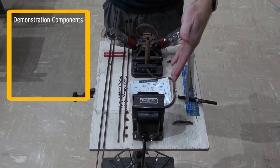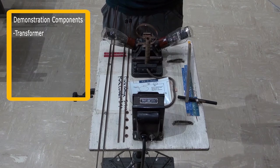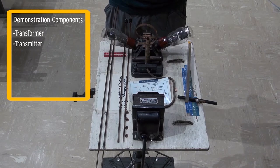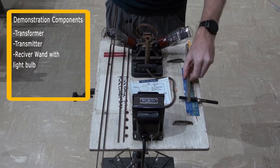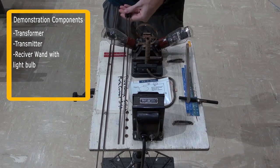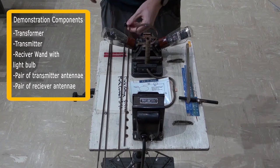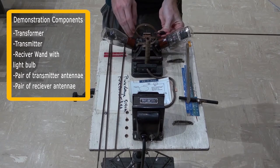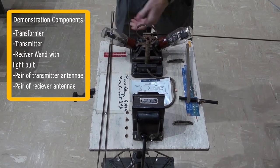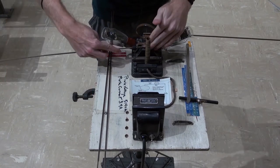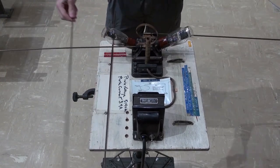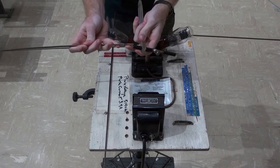So I've got a transformer here, which is powering this old-school radio transmitter. I have my receiver wand with a light bulb in it. I have a pair of transmitter antennae and a pair of receiver antennae. So I can now begin assembling by installing my transmitter antennae on either side, and then I can install my receiver antennae in my receiver wand.